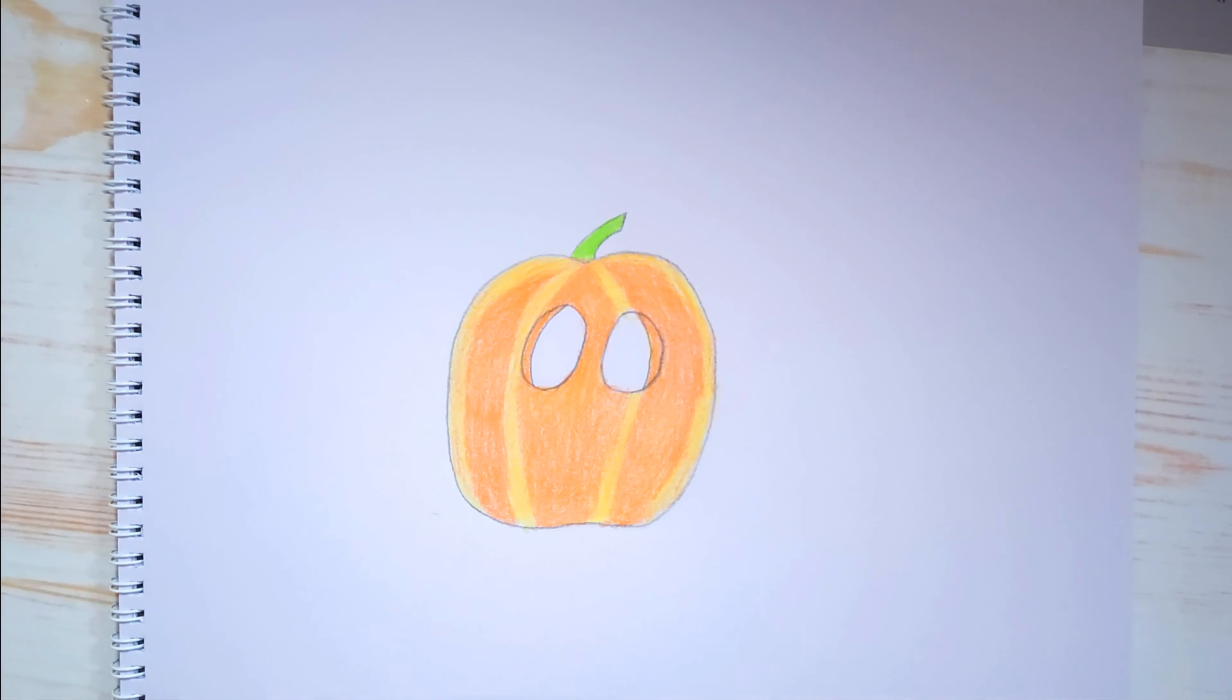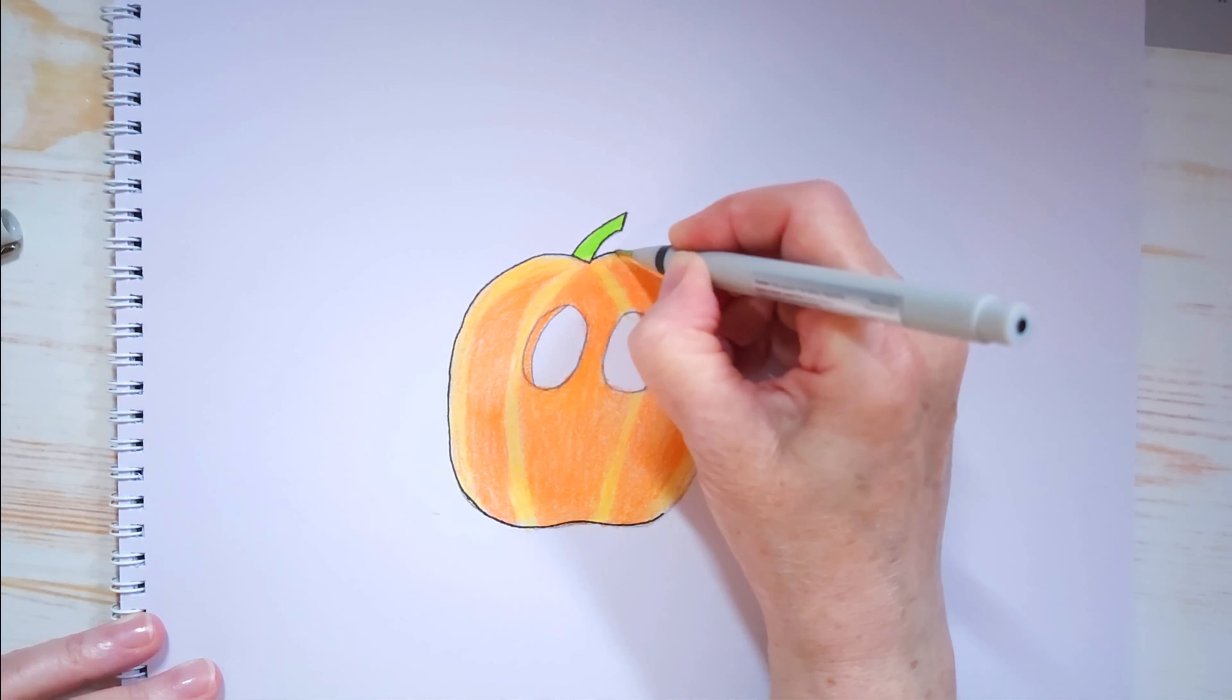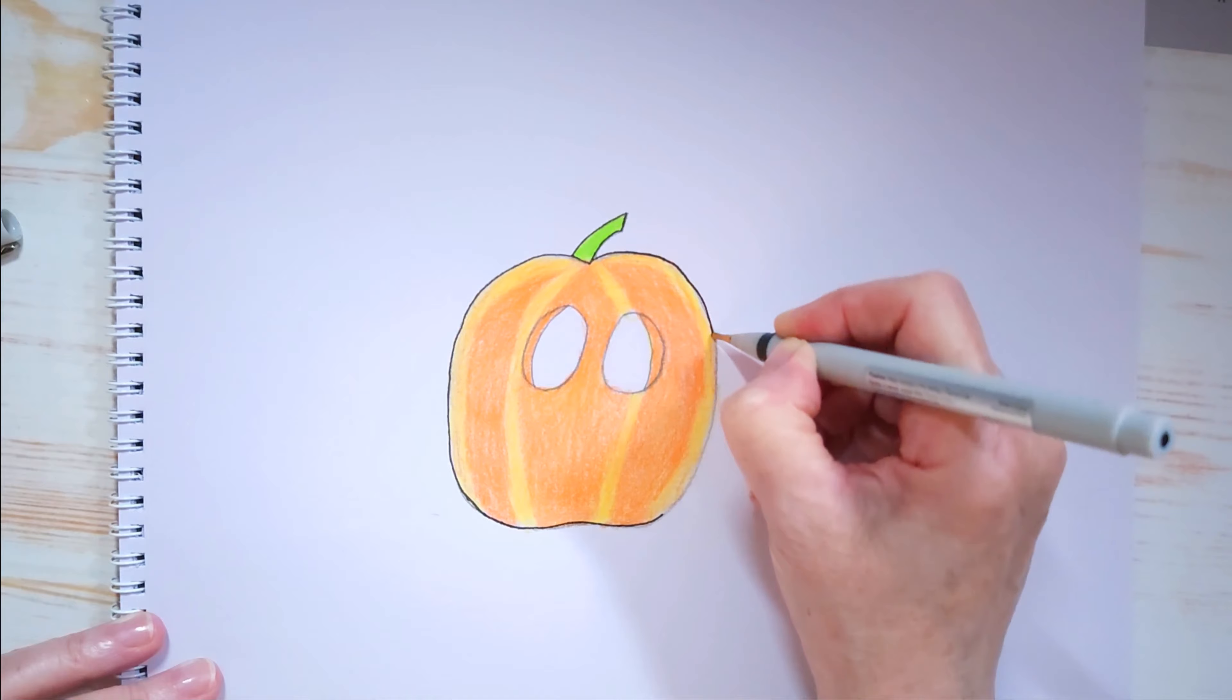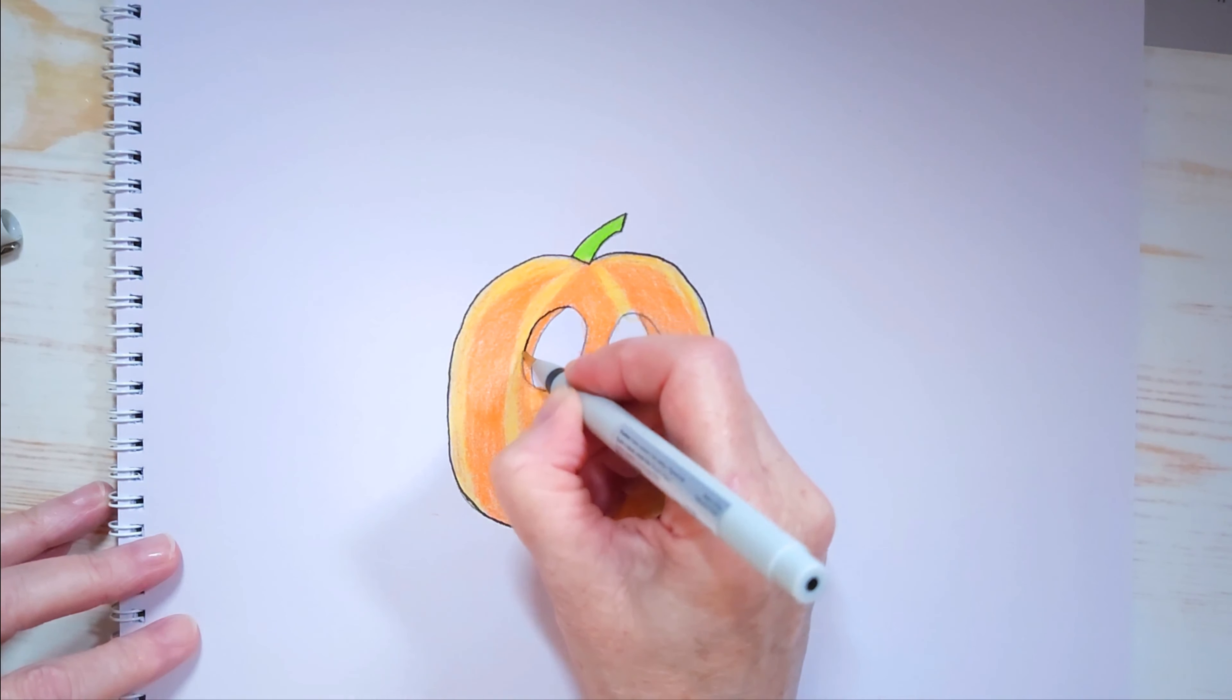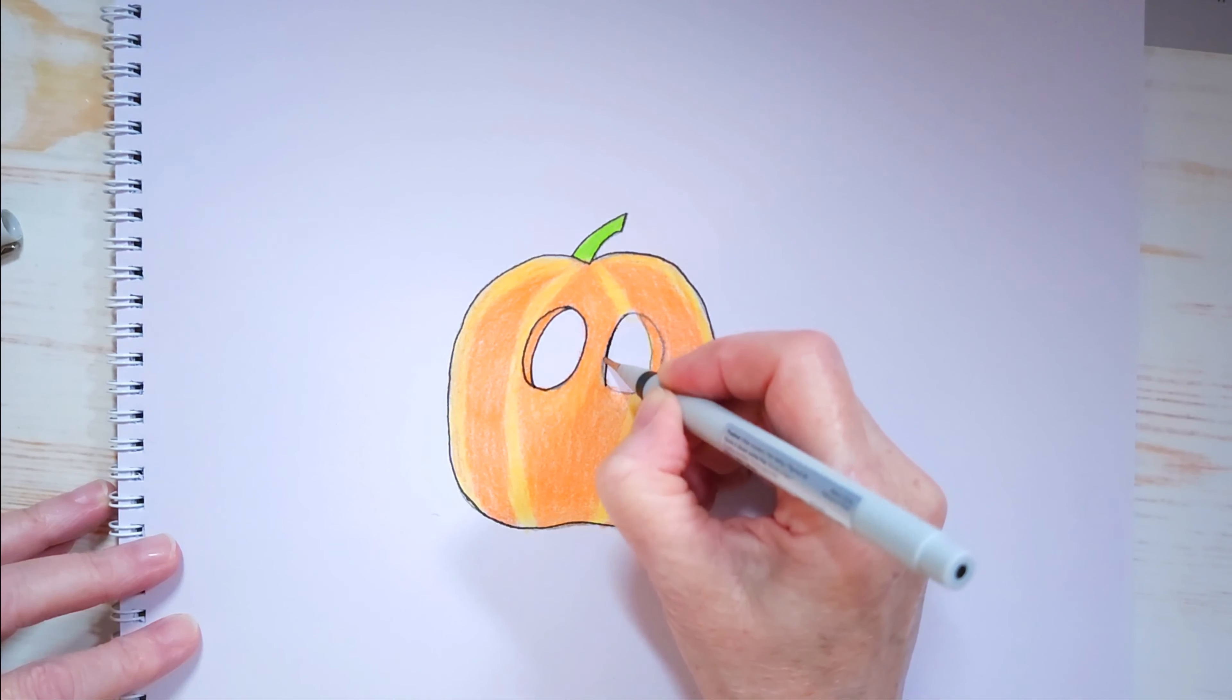Now I'm going to take my fineliner and I'm going to outline everything, outlining the stem and the whole pumpkin. Now that's optional, but I am a big fan of outlining. I think it makes it look really really nice and sharp. But you know, you could always outline with a black coloring pencil if you don't have a marker. And I think a lot of people have markers. So I'm going to outline the eyes. My dog is snoring now. He falls asleep so fast, I don't know how he does it. I wish I could fall asleep that fast. He was right beside me a second ago, now he's snoring and asleep.